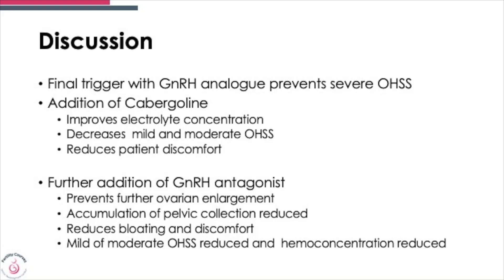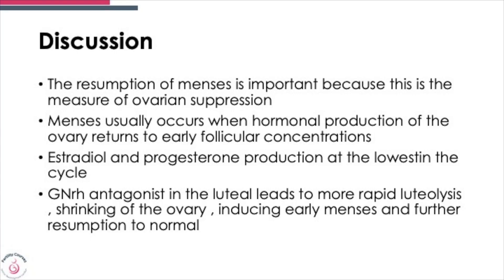The addition of cabergoline to some extent improves electrolyte concentration, decreases mild and moderate ovarian hyperstimulation, and reduces patient discomfort. The addition of the antagonist prevents further ovarian enlargement, prevents the accumulation of pelvic collection, reduces bloating, and hemoconcentration also tends to get reduced. Resumption of menses is important because it occurs due to ovarian suppression and when hormonal production reaches early follicular concentrations. The antagonist also leads to more rapid luteolysis — breakdown of the corpus luteum — to allow shrinking of the ovaries and thus aids early menses.